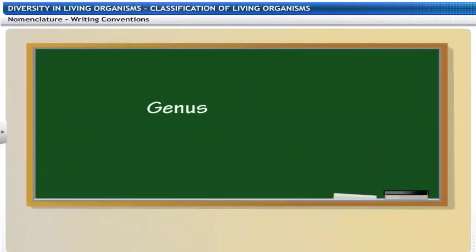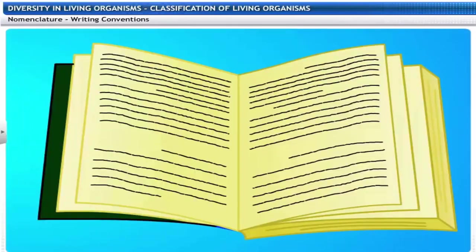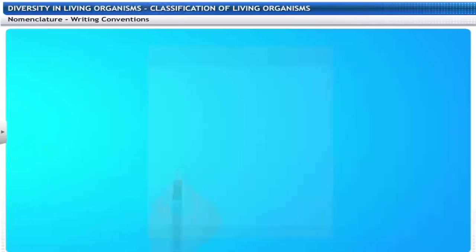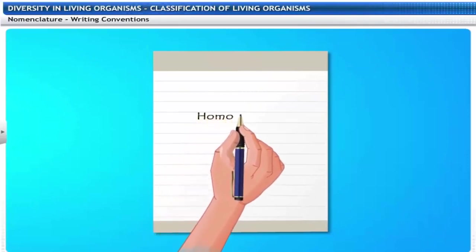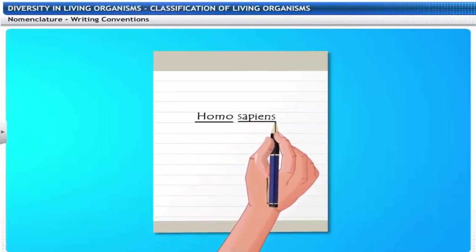This method of naming an organism is called binomial nomenclature. Certain conventions are followed while writing scientific names: the name of the genus begins with a capital letter; the name of the species begins with a small letter; when printed, the scientific name is given in italics; and when written by hand, the genus name and the species name have to be underlined separately.